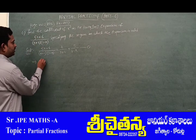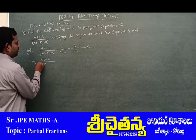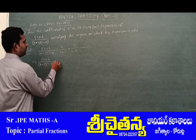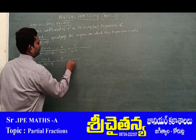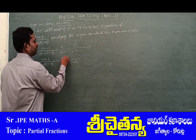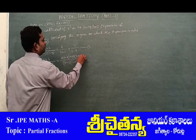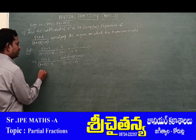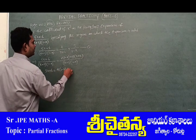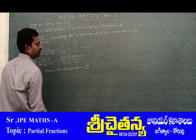Multiplying both sides by (x + 2)(1 - x), we get: 5x + 6 = A(1 - x) + B(x + 2). Keep this as equation number 2.